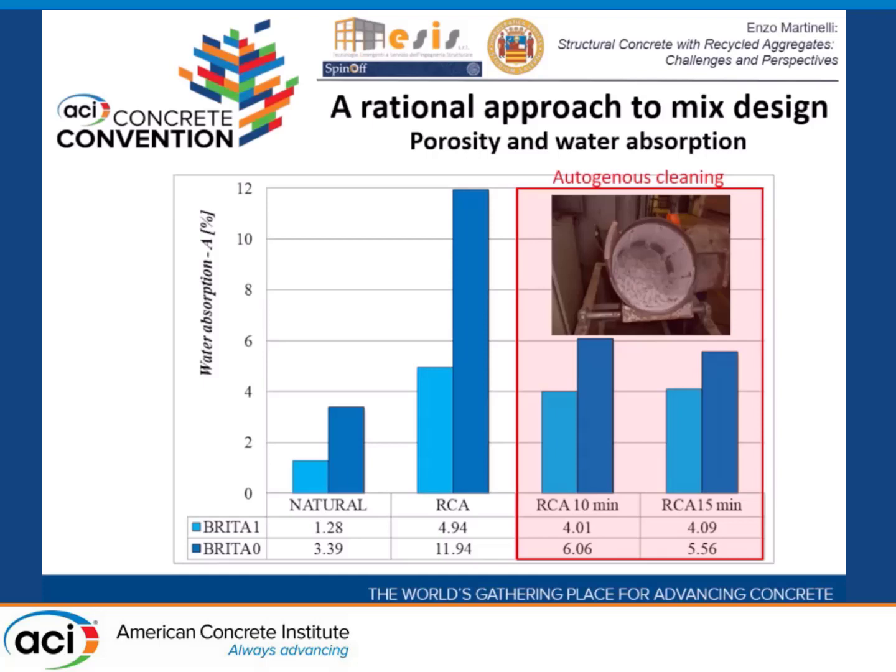Recycled concrete aggregates are almost an order of magnitude more porous, with higher water absorption. Of course, you can do something to reduce this porosity — for instance, you can put the aggregate in a mill and try to remove the attached mortar. But this costs energy, so the energy use must be balanced against the environmental benefit.